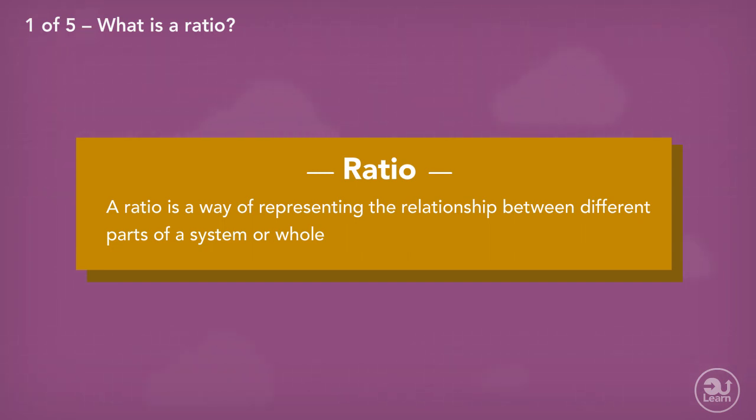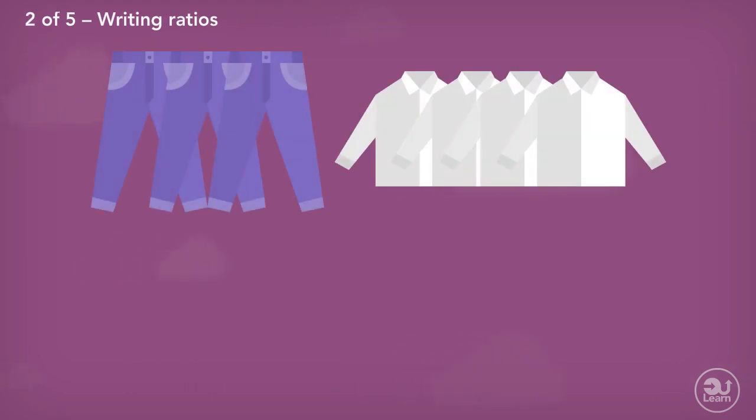But look at these examples. Let's say I have seven items of clothes. Of those items, three are trousers and four are shirts. To represent the relationship between trousers and shirts, I could say I have three trousers and four shirts.